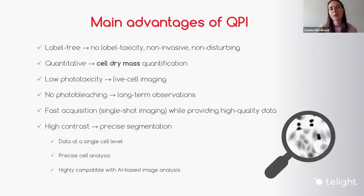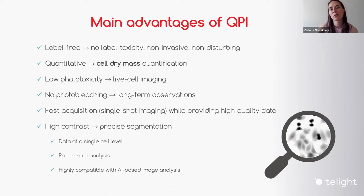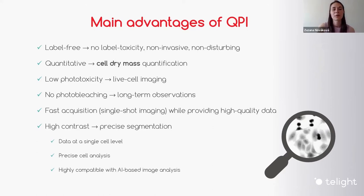To summarize the main advantages of QPI technology: first, it's a label-free technique — it allows you to visualize cells without the need to stain them or handle them, so there is no toxicity from labels. It's non-invasive and non-disturbing. Second, it's quantitative — it gives you quantitative data on cell dry mass. It's of low phototoxicity and there is no photobleaching, because you are not using any labels, so it's highly suitable for long-term live cell observations.